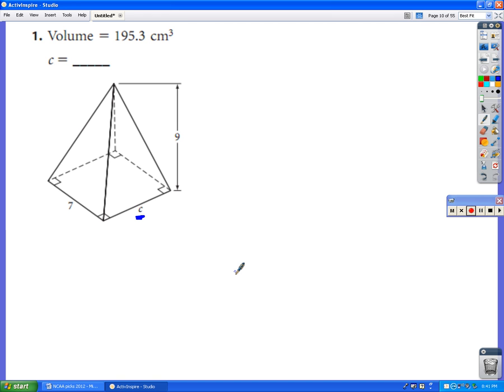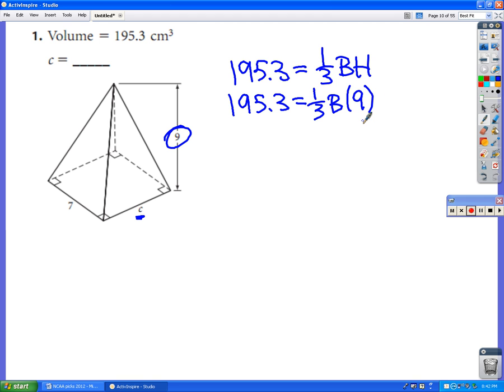Since we know this is a pyramid, we're going to take the volume that they give us and set it equal to the formula for the volume of a pyramid. So 195.3 equals one-third the area of the base times the height. However, I can do better than that because they told me that the height is 9. So it's really going to be one-third times the area of the base times 9.